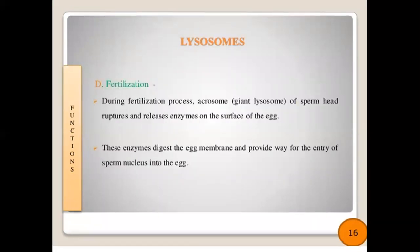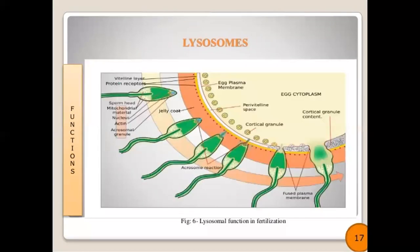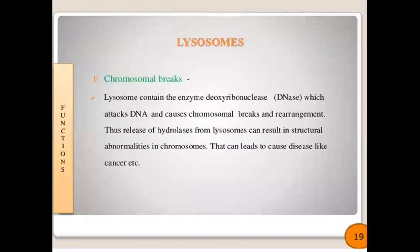Lysosomes in fertilization: during fertilization, acrosomes or giant lysosomes of the sperm's head rupture and release enzymes on the surface of the egg. These enzymes digest the egg membrane and provide a way for the entry of the sperm nucleus into the egg. Chromosomal breaks: lysosomes contain the enzyme deoxyribonuclease, which attacks DNA and causes chromosomal breaks and rearrangement. Release of hydrolases from lysosomes can result in structural abnormalities in chromosomes that can lead to diseases like cancer.